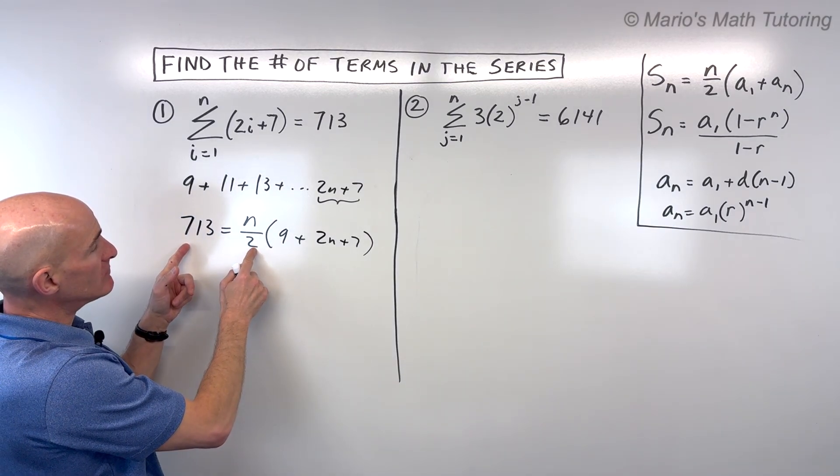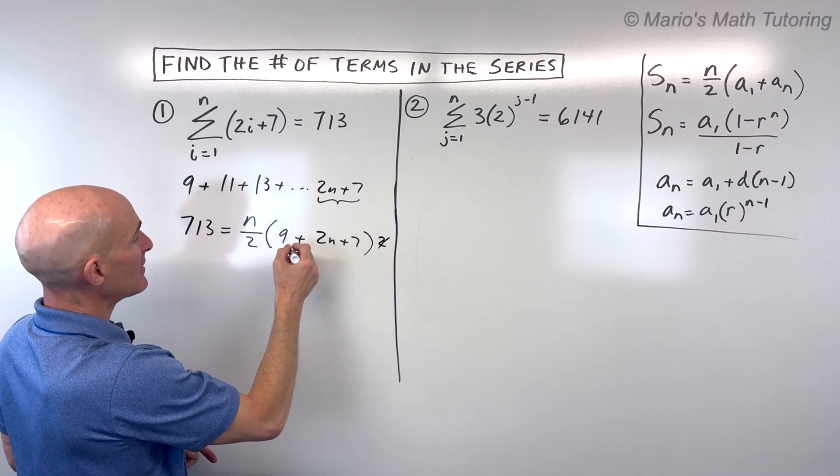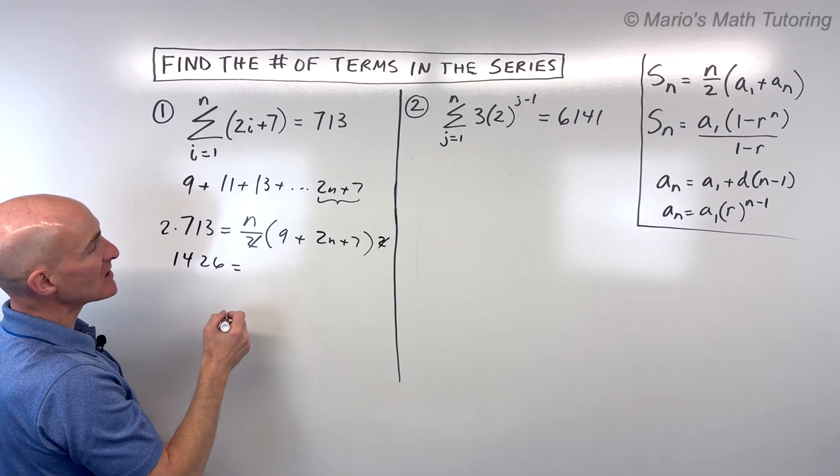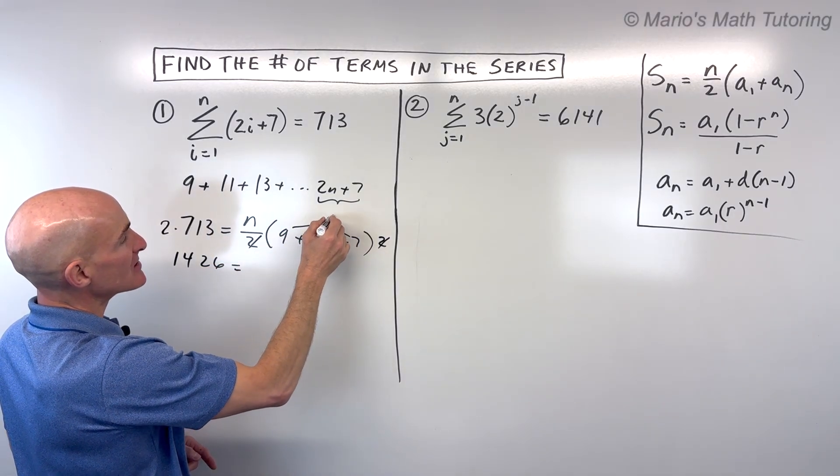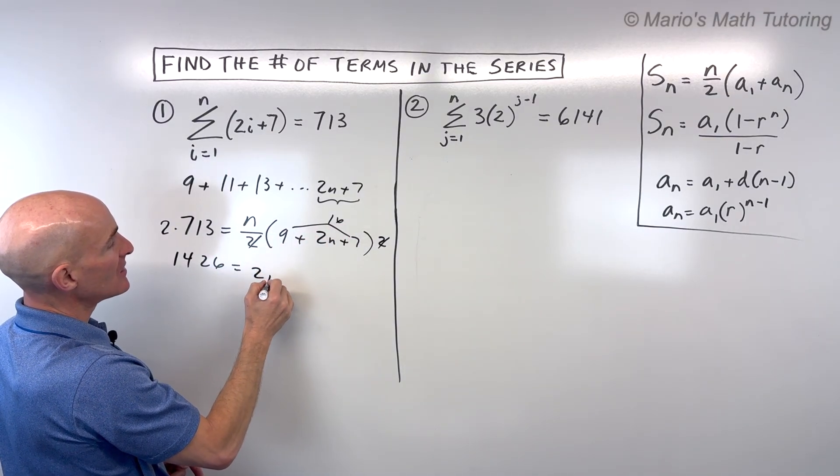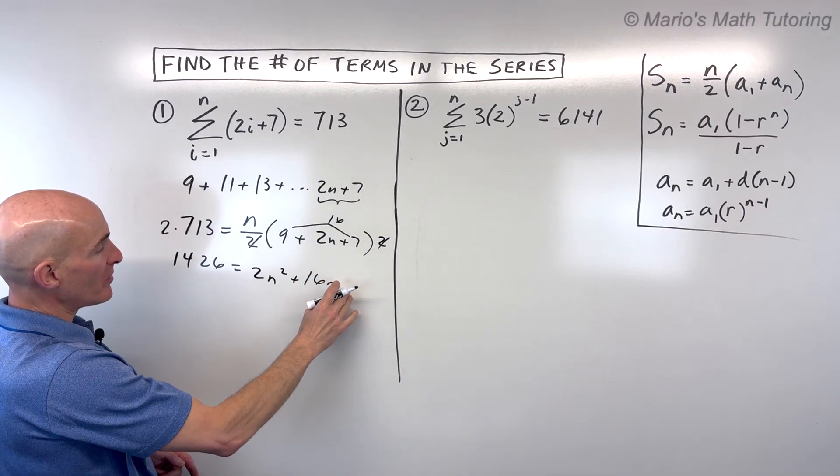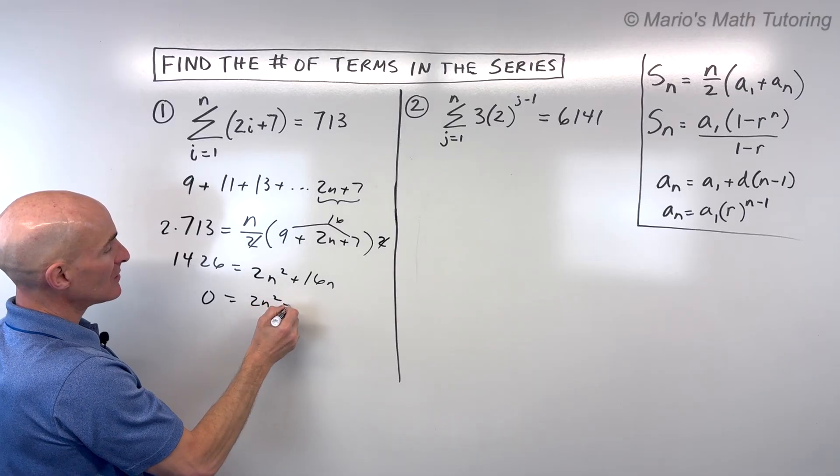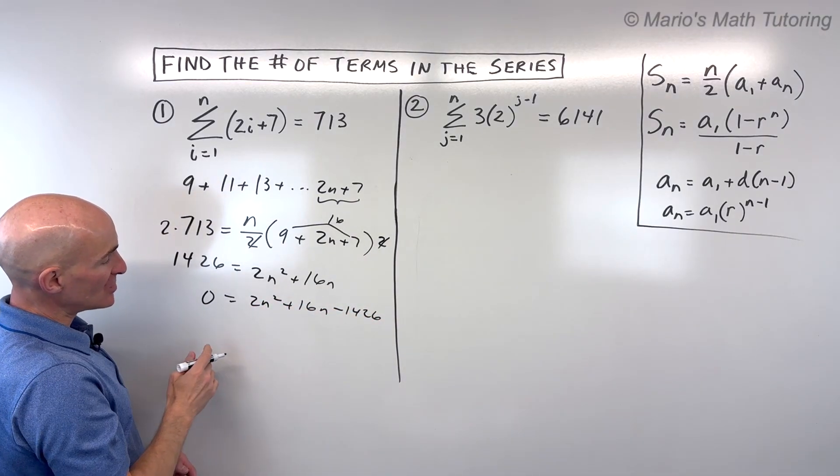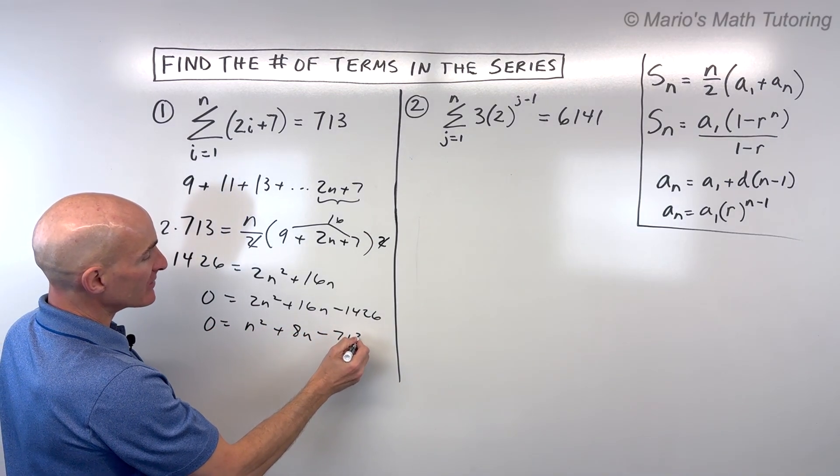So the first thing I would do is I'd multiply both sides by 2, just to get rid of this fraction here. So I'm going to multiply the right side by 2, the left side by 2. That gives us 1426. This 9 plus 7 is 16. So this is 2n plus 16. If I distribute the n in, that's going to give us 2n squared plus 16n. I'm going to subtract the 1426 to the other side, just to get everything on one side, set it equal to 0. And we could divide everything by 2.